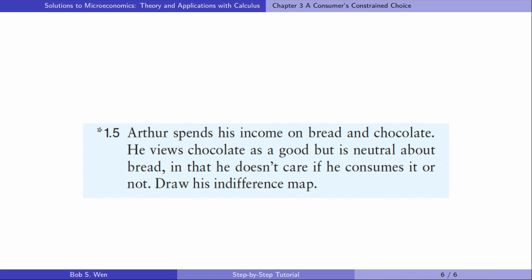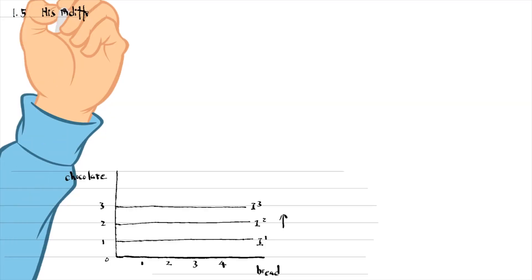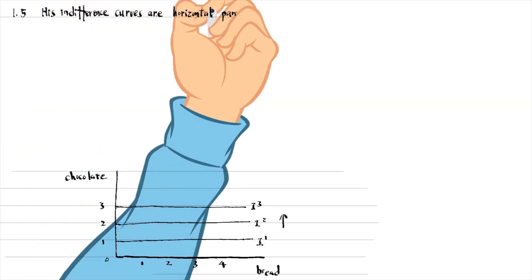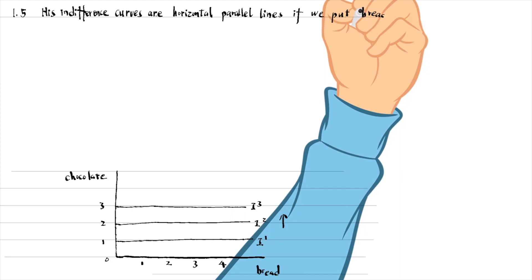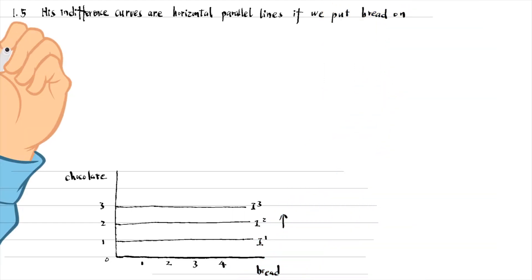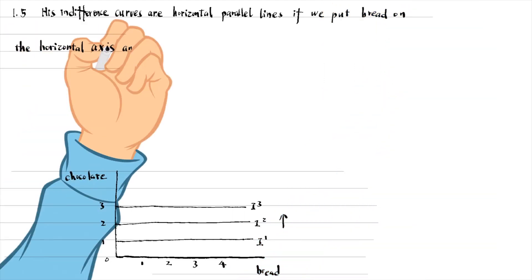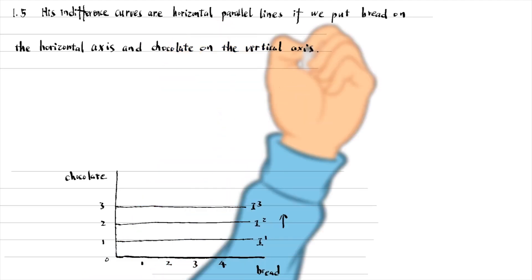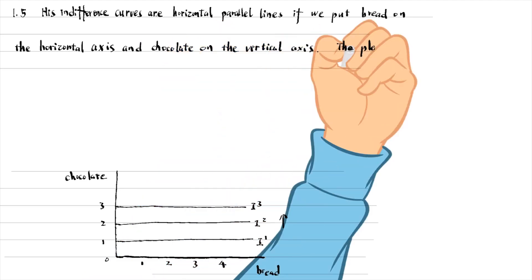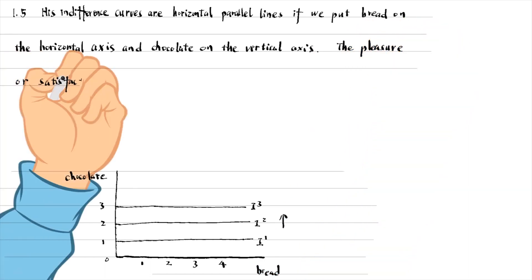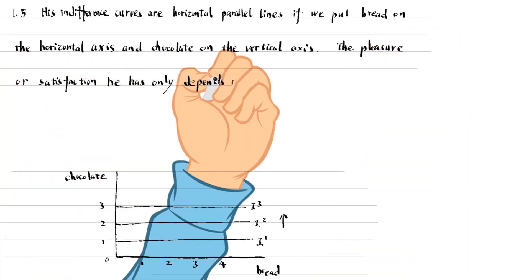Draw his indifference map. His indifference curves are horizontal parallel lines if we put bread on the horizontal axis and chocolate on the vertical axis. The pleasure or satisfaction he has only depends on the amount of chocolate.